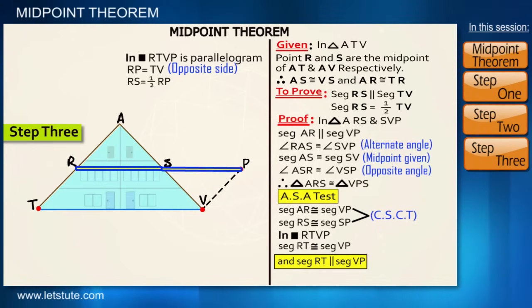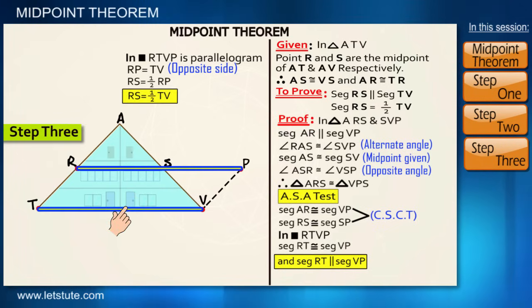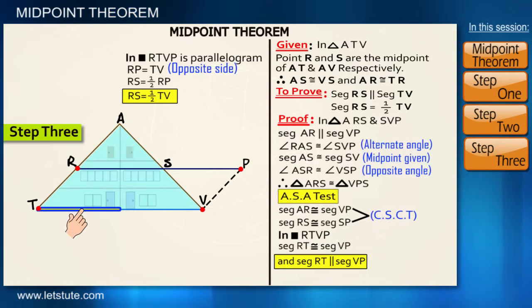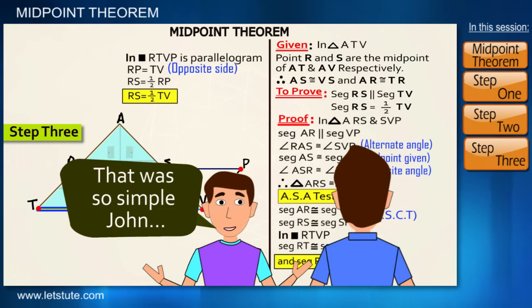And because RP is equal to TV, so we say that RS is also half of the TV. That was so simple, John.